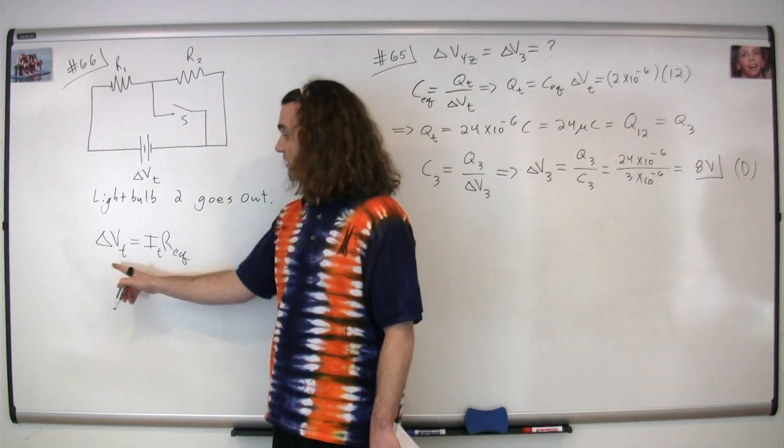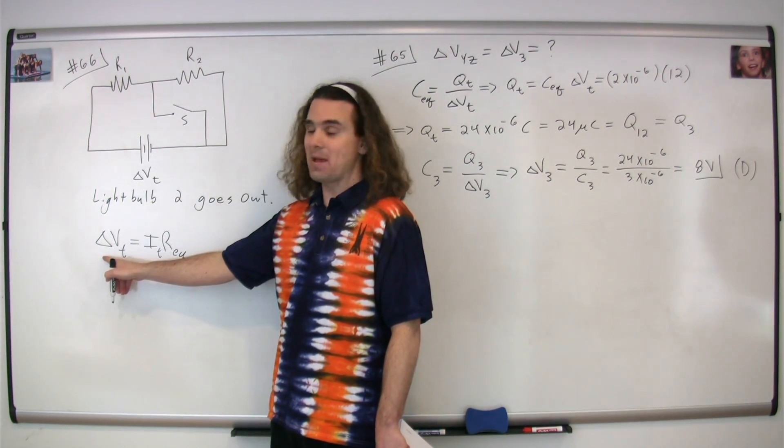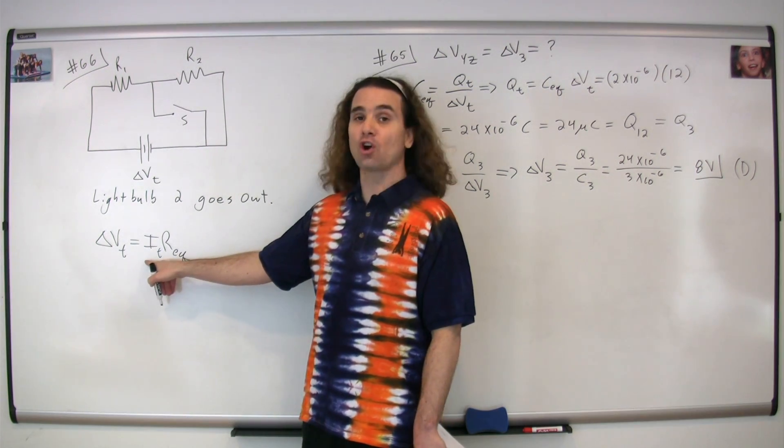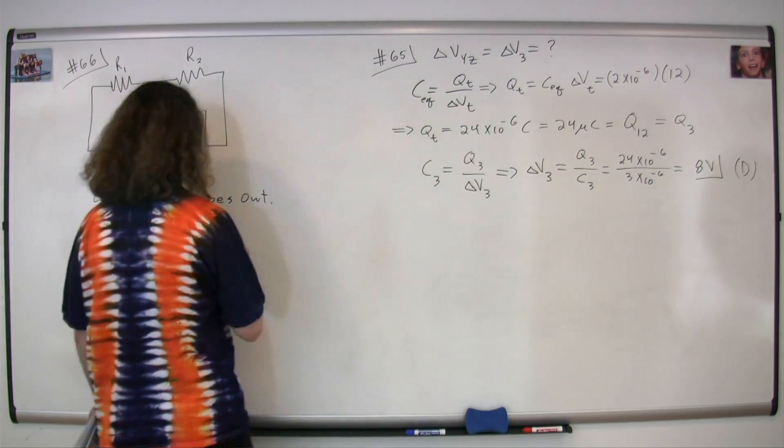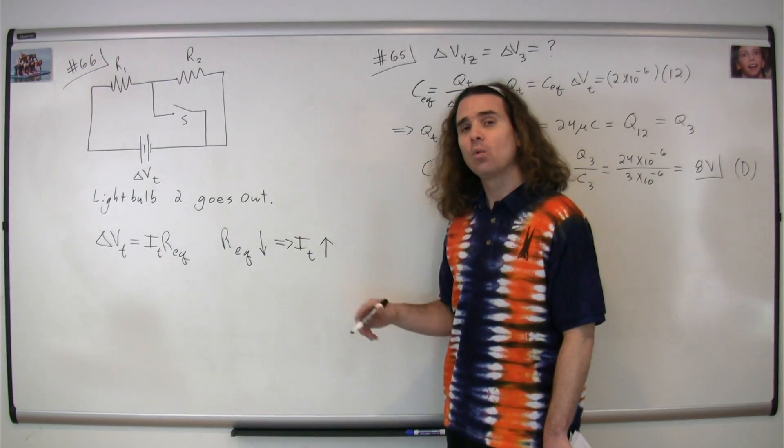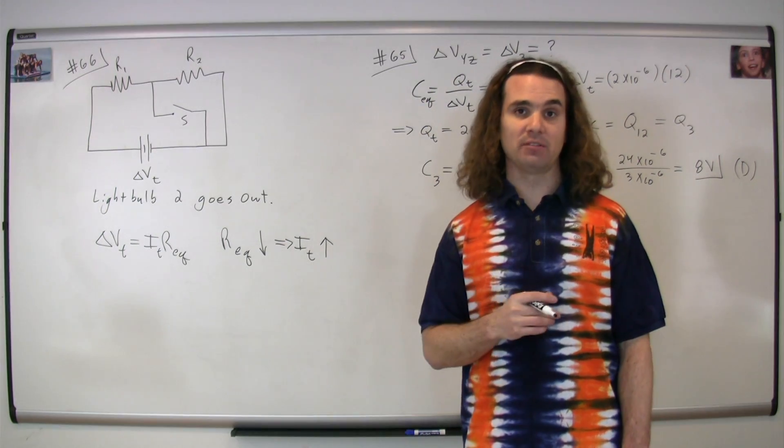Because the electric potential difference equals the current times the resistance, the electric potential difference across the battery remains the same. The equivalent resistance of the circuit went down, therefore the current through the circuit is going to go up. We now know the current through light bulb one goes up. We need to talk about the brightness of light bulb one, which is the power output of light bulb one.